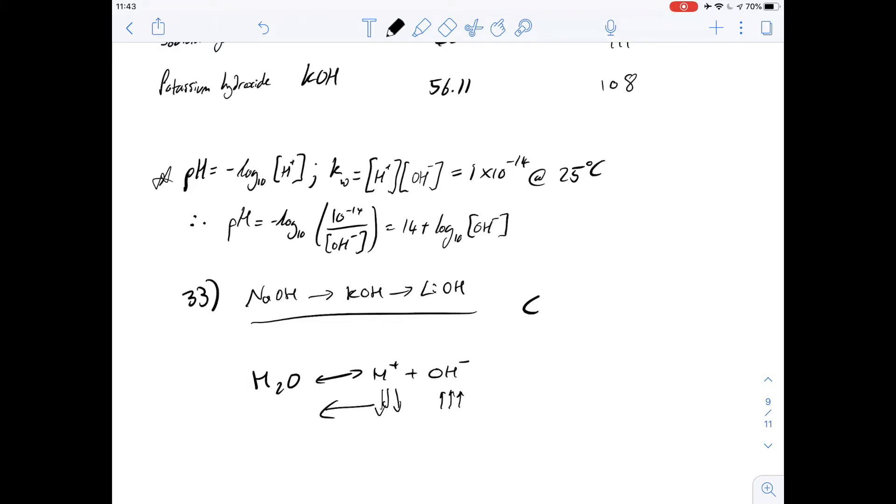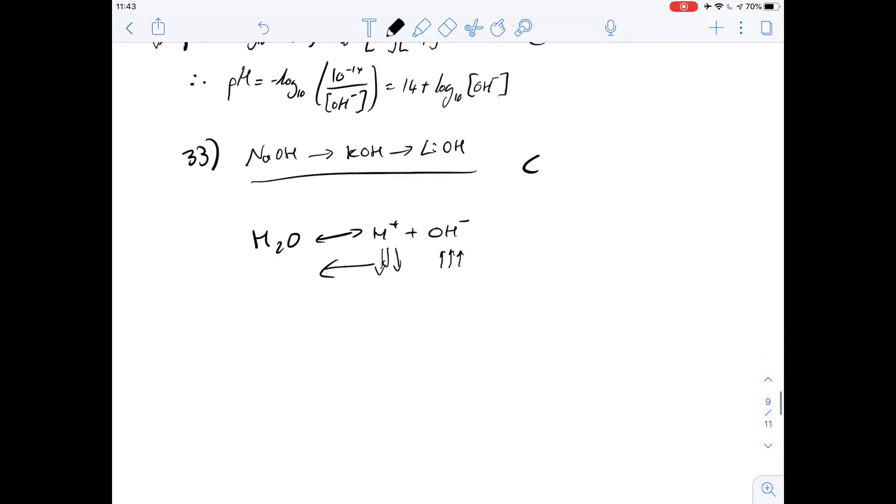Question 34 says a solution is made by dissolving 80 grams of sodium hydroxide in 100 milliliters of water. What is the pH of this solution? Working out the pH involves a couple of steps.